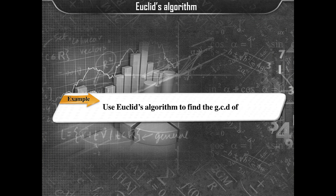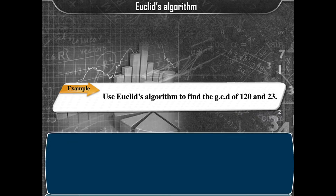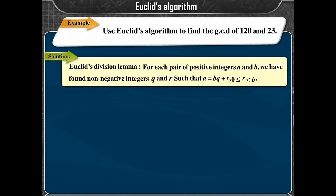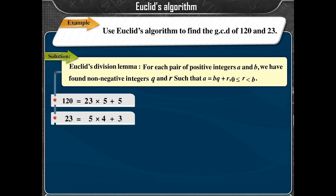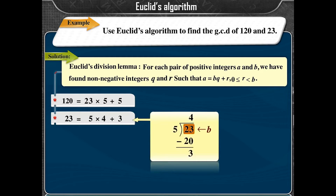Example: Use Euclid's algorithm to find the GCD of 120 and 23. Solution: 120 = 23×5 + 5, where A = 120, B = 23, Q0 = 5, R0 = 5. Then 23 = 5×4 + 3, where B = 23, R0 = 5, Q1 = 4, R1 = 3.